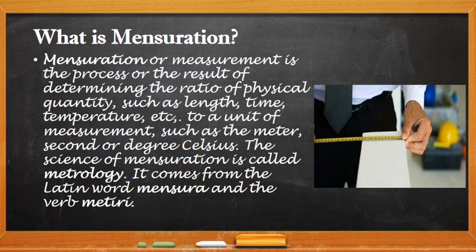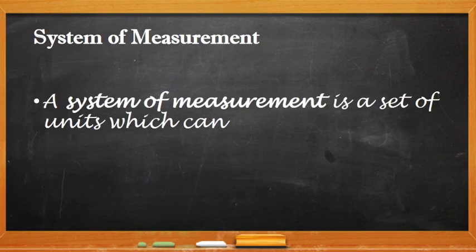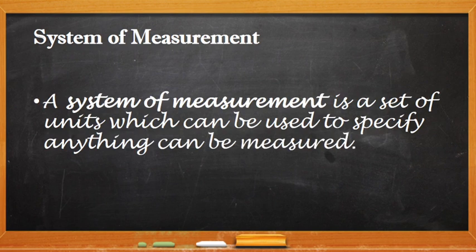A system of measurement is a set of units which can be used to specify anything that can be measured. We have a set or a group of units which is used to emphasize what is being measured. So that is a system of measurement.